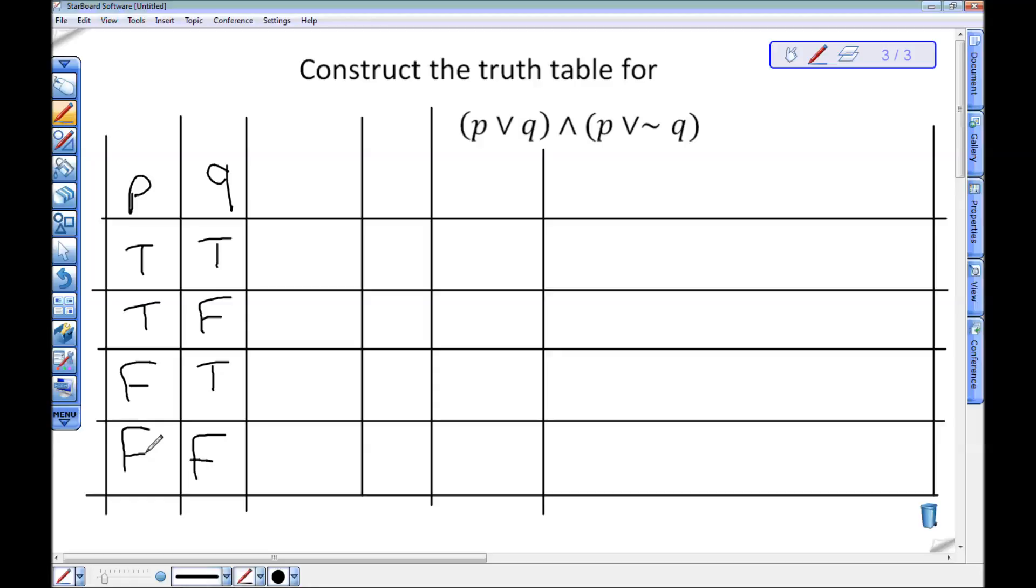Now, other things I'm going to need to complete this table. I'm going to need P or Q because I see that that's in parentheses. I'm going to need not Q so that I can figure out what P or not Q is. And then once I have those values, I should be able to figure out what P or Q and P or not Q is.